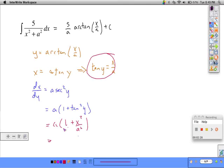Simplifying this out, we get a squared plus x squared divided by a. So that's dx dy, which means that dy dx, the derivative of arctangent x over a with respect to x, is a constant over x squared plus a squared. That constant is the denominator of what we're taking the arctangent of.